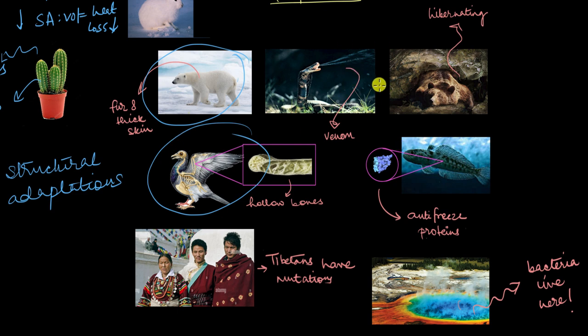But these other adaptations, the snake venom being produced or the antifreeze proteins, even the mutations and the bacteria that can thrive in the hot springs. All of these things, all of these adaptations, they are happening inside the organism's body. Think about it, the venom is getting produced inside the snake. The antifreeze proteins are being produced inside the fish. The mutations are in the genes, again, inside the Tibetans. And the bacteria that can thrive in these hot springs are due to some enzymes, which work faster and better at high temperatures. So those enzymes are also being produced inside the bacteria.